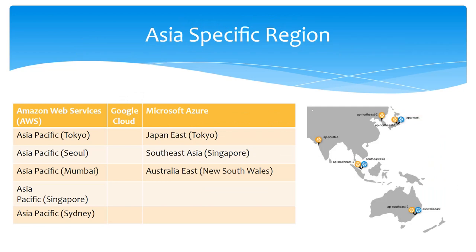Let's move ahead with the Asia Pacific region. As we can see in the diagram, it includes Japan, India, Australia, and Singapore. Notably, there is no region supported by Google Cloud Platform here — only Amazon Web Services and Microsoft Azure. AWS supports Asia Pacific in Tokyo, Seoul, Mumbai, Singapore, and Sydney. Microsoft Azure supports Tokyo, Singapore, and New South Wales. So these are all the regions supported by each platform, and indirectly by Snowflake.